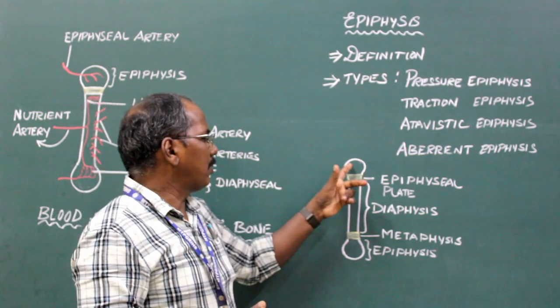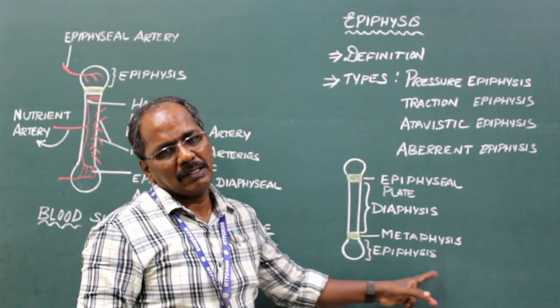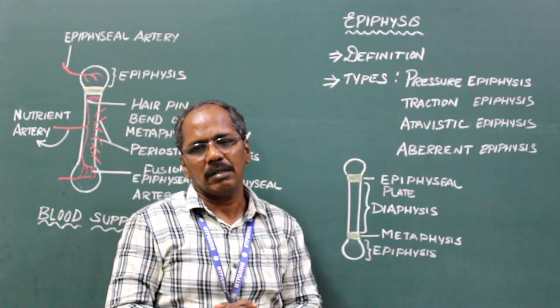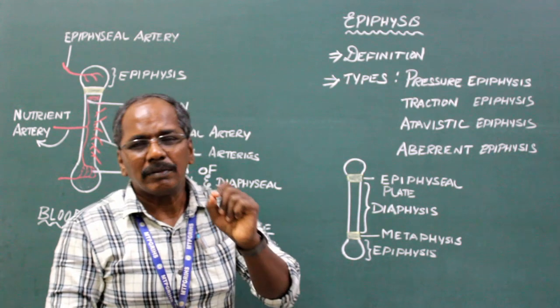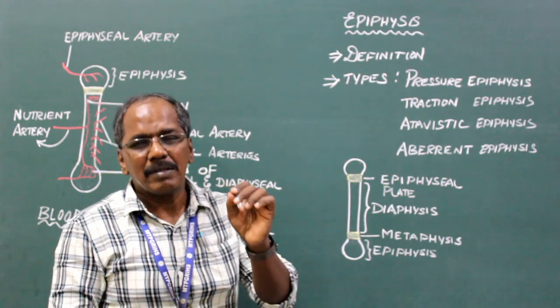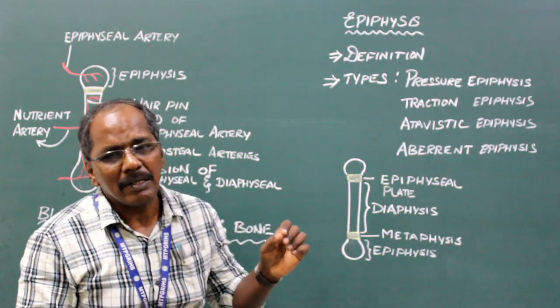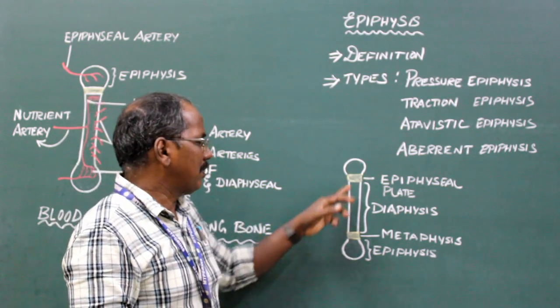The ends of the bone are known as epiphysis. The shaft is known as diaphysis. The ends of the bone which ossify, that is develop from secondary centers, are known as epiphysis.